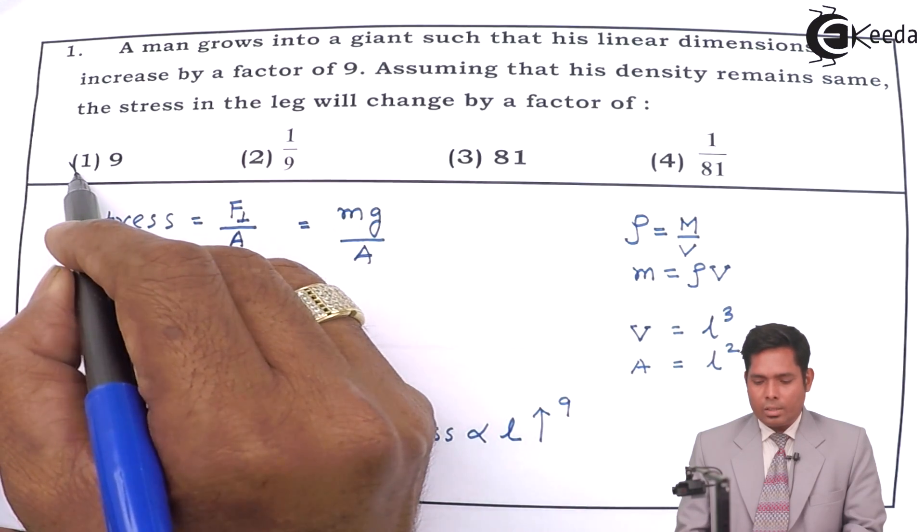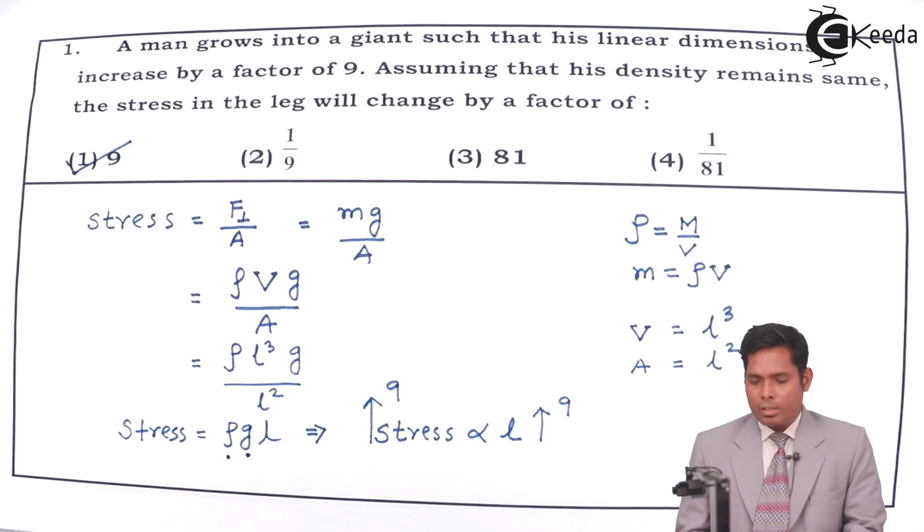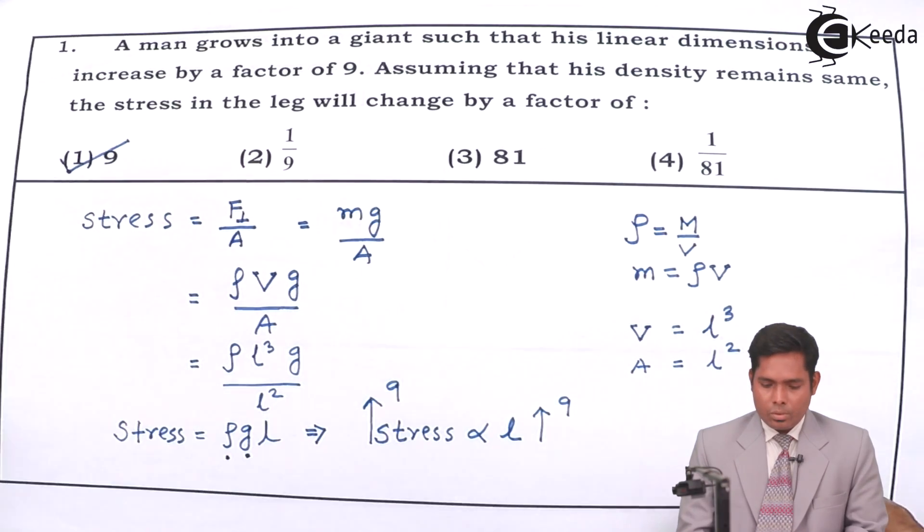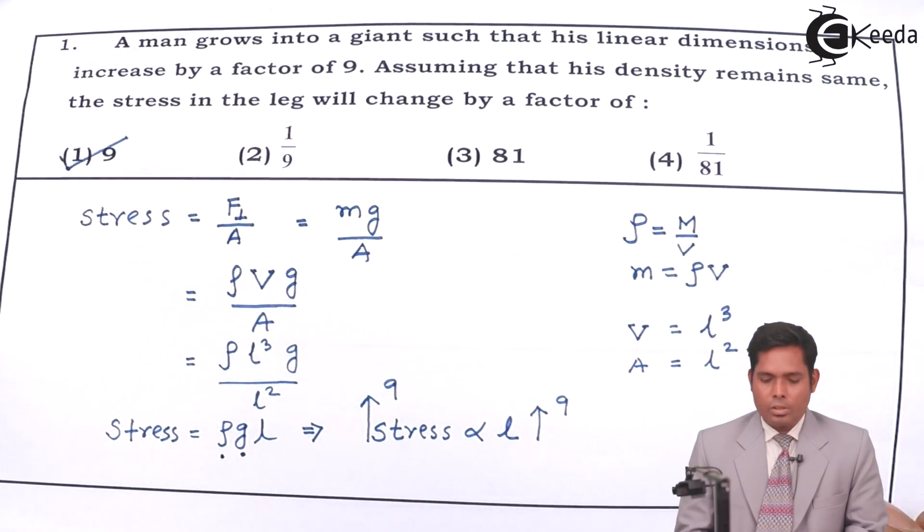So, the question is to find the stress in the leg which changes by a factor of, the answer should be 9. So, this is the correct answer.